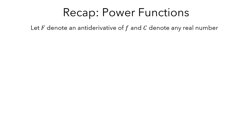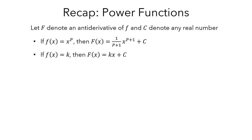Let's start by recapping how to compute antiderivatives for power functions. In our notation, capital F denotes an antiderivative of a function little f, and c represents any real number, like 17 or pi. The rule for power functions is that if f equals x to some power p, then to compute its antiderivative, you add 1 to the exponent and divide by the new exponent, then add a constant c. If f is a constant function k, then its antiderivative is kx plus c. There is one important caveat: we could only do this when the power was not equal to negative 1.